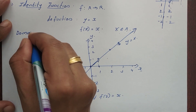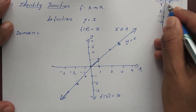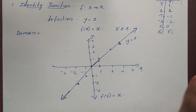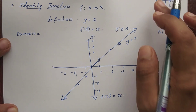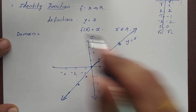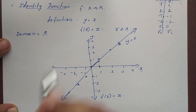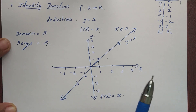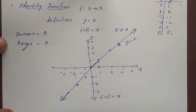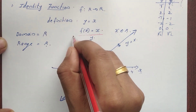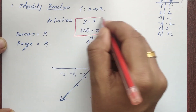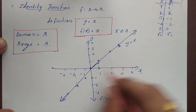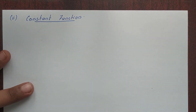The domain is the set of all input values. We can have x as any positive value, negative value, zero, or irrational numbers like root 2. The domain is R — all real numbers. Since the output equals the input, the range is also R. So for the identity function, domain = R and range = R.